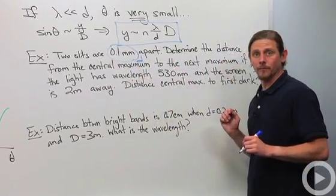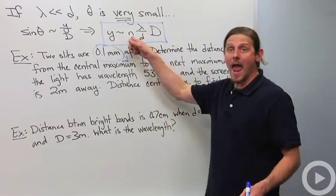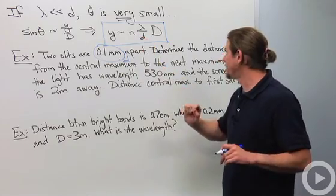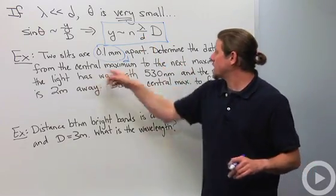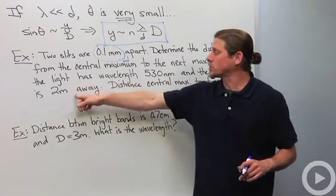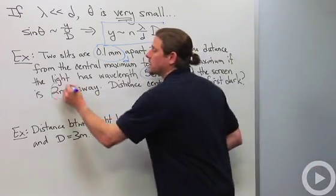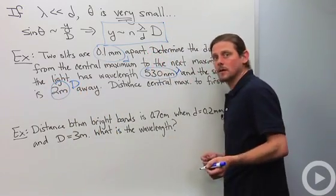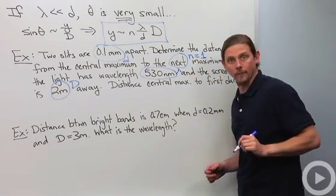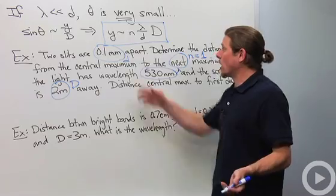Determine the distance from the central maximum to the next maximum. So that means I'm looking for bright spots, so that means I need n to be an integer, right? So we're going to take n equals 1. If the light has wavelength 530 nanometers and the screen is two meters away, so this is my λ, this is my big distance, and the word 'next' here says n equals 1.